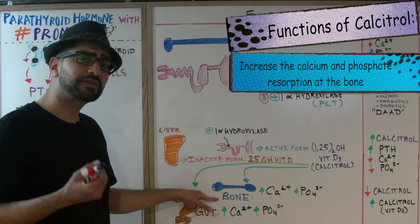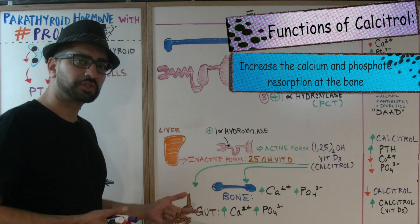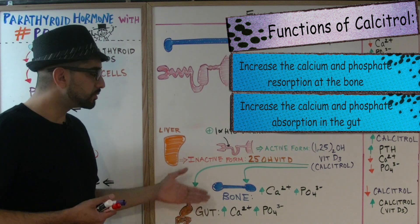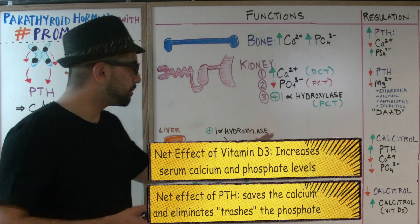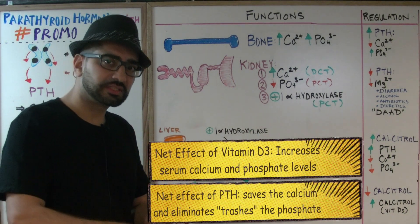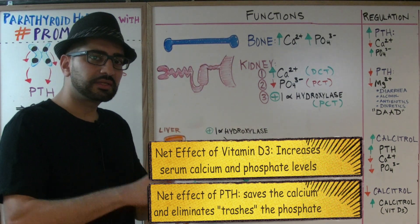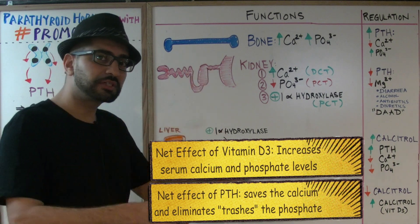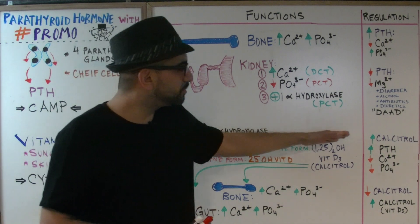What are the functions of calcitriol? At the bone, it does the same thing as parathyroid hormone — it increases calcium resorption and phosphate resorption. In the gut, it increases calcium absorption as well as phosphate absorption. Overall, vitamin D brings calcium and phosphate into the serum, while parathyroid hormone then works to get rid of the phosphate and preserve most of the calcium.